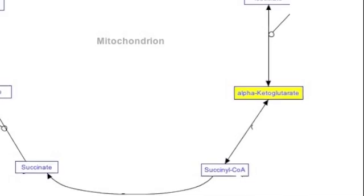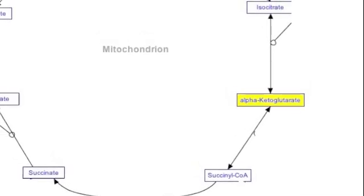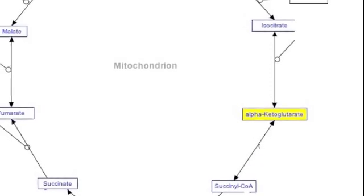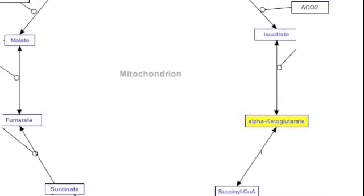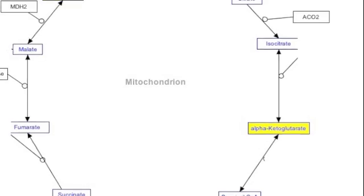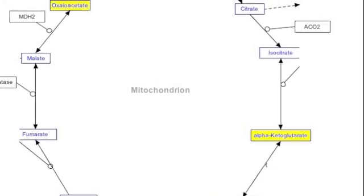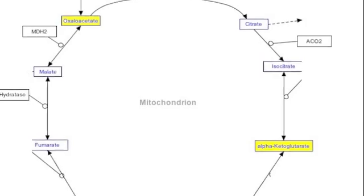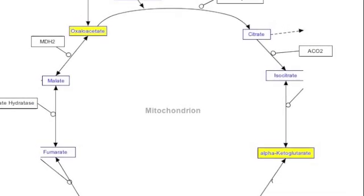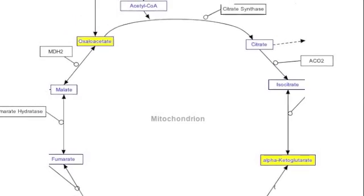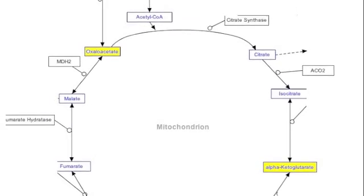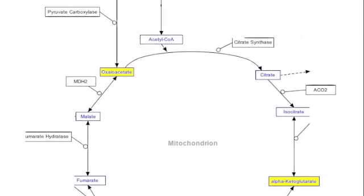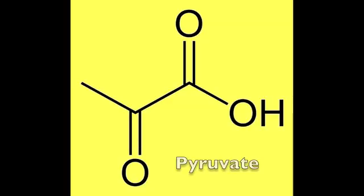You transfer the amino group and transform that amino acid into an alpha-ketoacid, which can then be used in the Krebs cycle — mainly the Krebs cycle — or in other energetic pathways by our organism. And you transfer the amino group onto another alpha-ketoacid, which becomes an amino acid.